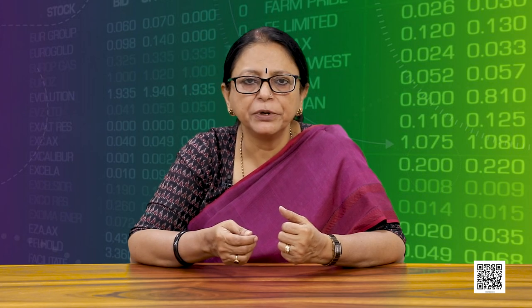Let us first understand what is meant by variables and attributes. In common language, the term variable means certain characteristics that change from one object to another. For example, heights of individuals and their looks change and therefore they are variable. However, in statistics, the term variable is used only if the change in characteristic can be numerically measured.